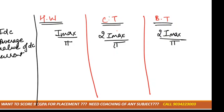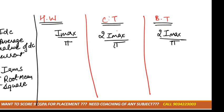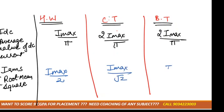You have to remember all these formulas because they will ask you in the numericals. Next is IRMS — root mean square current. For half wave rectifier the formula is Imax by 2. For center tapped rectifier the formula is Imax by root 2. Again for bridge type, it is Imax by root 2.